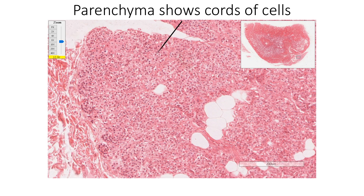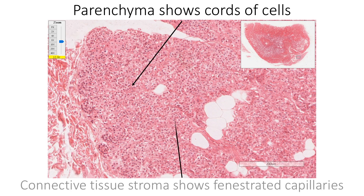Parenchyma shows cords of cells and, like any other endocrine gland, connective tissue stroma shows fenestrated capillaries.